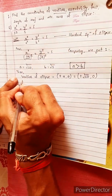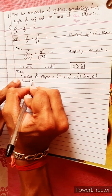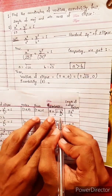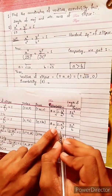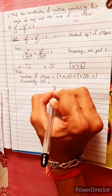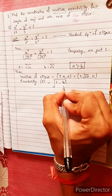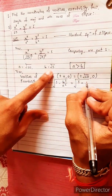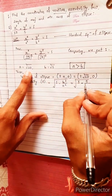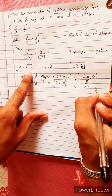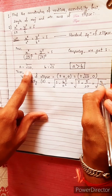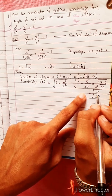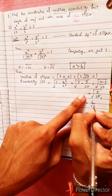This is the eccentricity formula. Eccentricity e equals under root of 1 minus b squared divided by a squared, which equals under root of 1 minus 5 divided by 10. That gives under root of 5 by 10, which simplifies to 1 by under root 2.